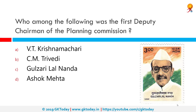Who among the following was the first Deputy Chairman of the Planning Commission? That would be Gulzarilal Nanda. Gulzarilal Nanda was also the interim acting Prime Minister of India for two short periods following the deaths of Jawaharlal Nehru in 1964 and Lal Bahadur Shastri in 1966. He was an Indian politician and economist who specialized in labour issues.